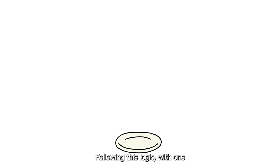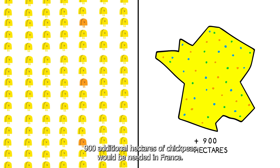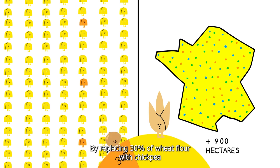Following this logic, with one slice of cake served every 20 days in canteens, nearly 900 additional hectares of chickpeas would be needed in France.